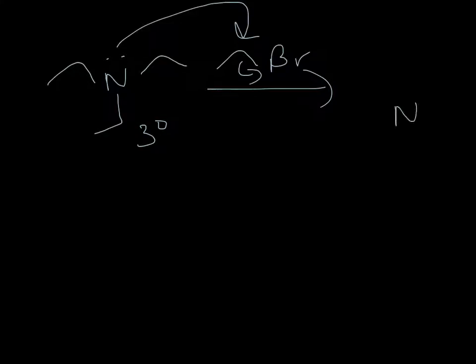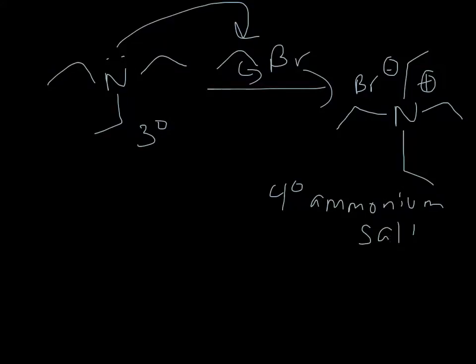So if we start with our tertiary amine and we have yet another equivalent of ethyl bromide in solution, I end up getting this guy. And this is a quaternary ammonium salt. The ammonium tells me that I've got a positively charged species. And there's nothing to deprotonate. Those are all alkyl groups. And so it's kind of stuck with that charge.